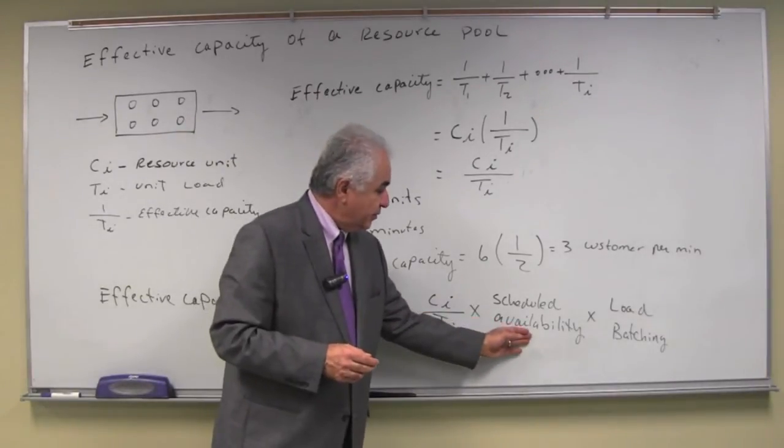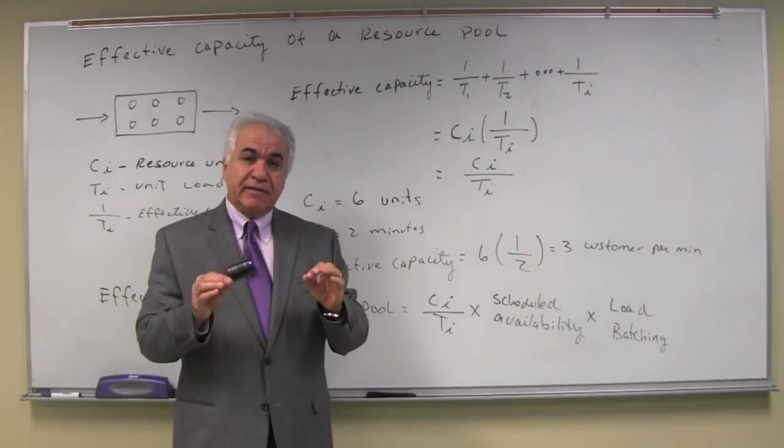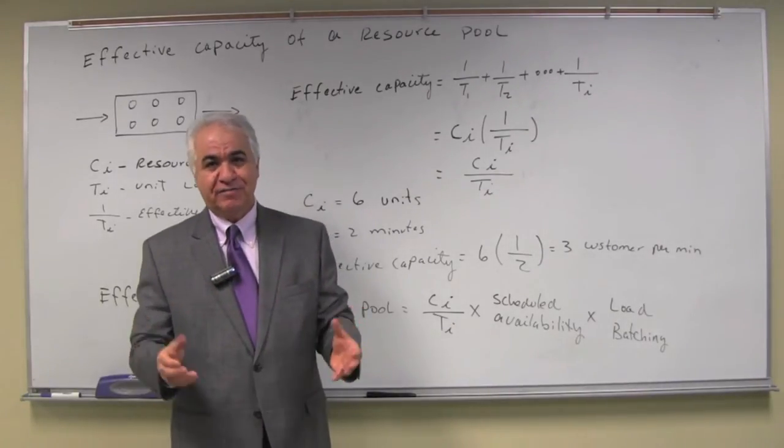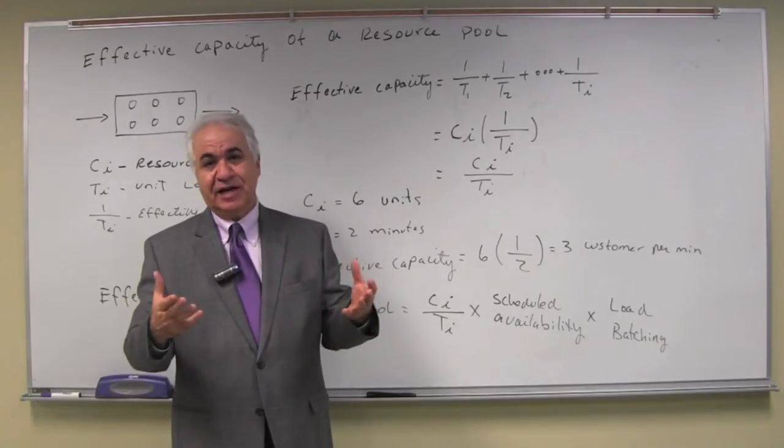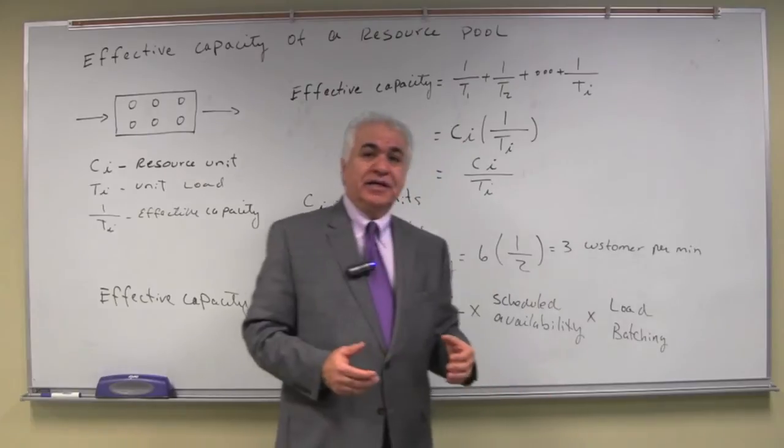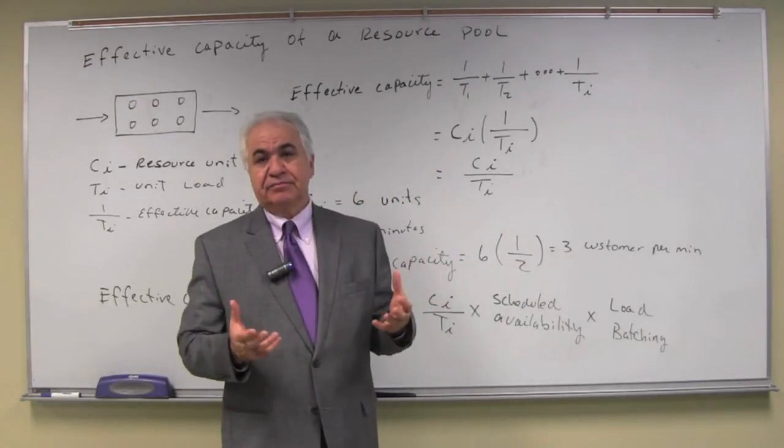One is what we refer to as scheduled availability, the amount of time a resource unit is available to perform work, 8 hours, 6 hours, 3 hours, and then load batching, if the work is actually performed in batches, as in bakeries.